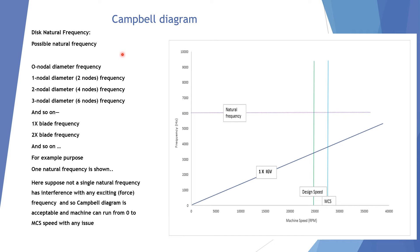Now, natural frequency. The possible natural frequencies include: 0 nodal diameter frequency, 1 nodal diameter (equal to 2 nodes), 2 nodal diameter (4 nodes), 3 nodal diameter (6 nodes), and so on. Similarly, 1 × blade frequency, 2 × blade frequency, and so on. In this case, only one natural frequency is shown for understanding purposes, but in actual cases we need to consider all relevant natural frequencies.